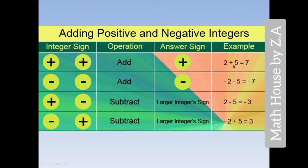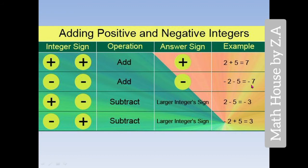Both numbers are positive, so in both cases we do addition. As you can see, two is negative and five is also negative — in both we add and the answer gets a negative sign. So the rule is simple: if you have two positives, the answer is positive, and if you have two negatives, the answer is negative.